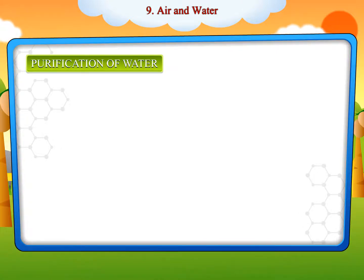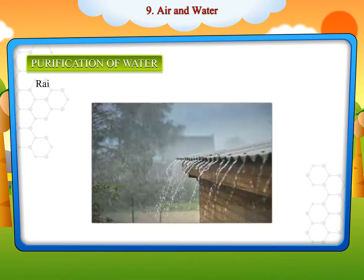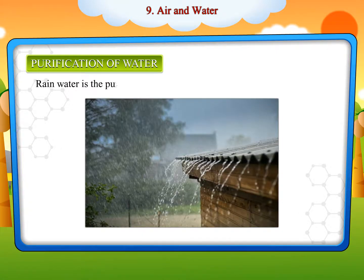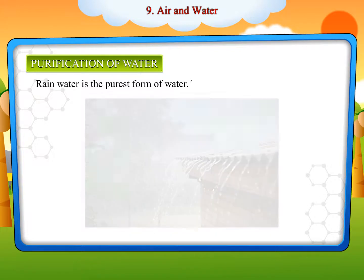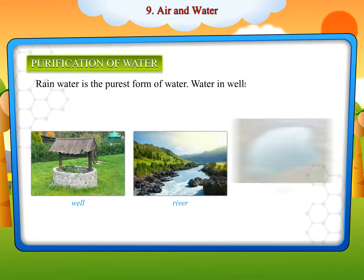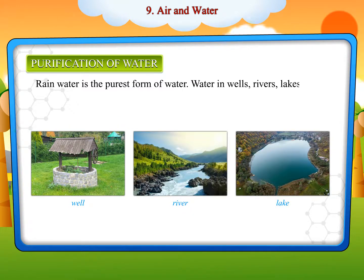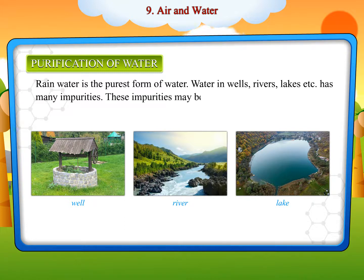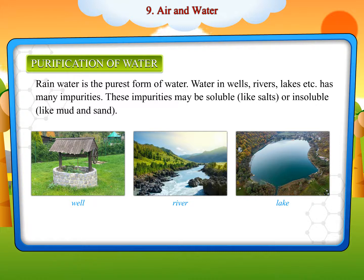Purification of water. Rainwater is the purest form of water. Water in wells, rivers, lakes, etc. has many impurities. These impurities may be soluble like salts or insoluble like mud and sand. It may also contain disease-causing microorganisms.